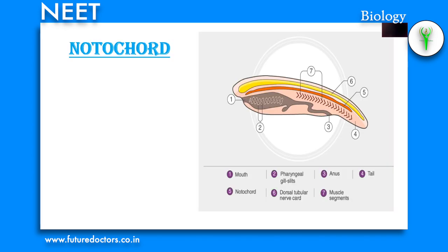Notochord is a cartilaginous skeletal rod supporting the body in all embryonic and some adult chordate animals. It is a mesodermally derived rod-like structure found on the dorsal side during embryonic development in some animals. Animals with a notochord are called chordates, and those animals which do not form this structure are called non-chordates. Example: porifera to echinoderms are non-chordates.